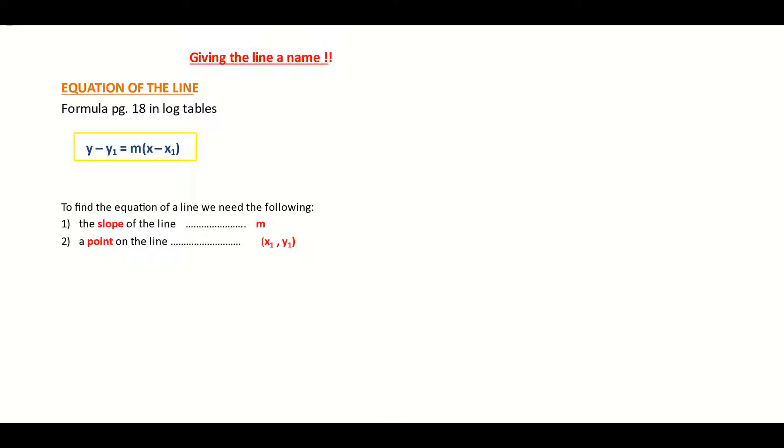There's a formula in your log tables on page 18 which will help us to form the equation of the line, which is written here in the yellow box as y minus y1 equals m times x minus x1. You can see from that formula you need two things. You need the m, which is standing for the slope, and you need a point, one point.